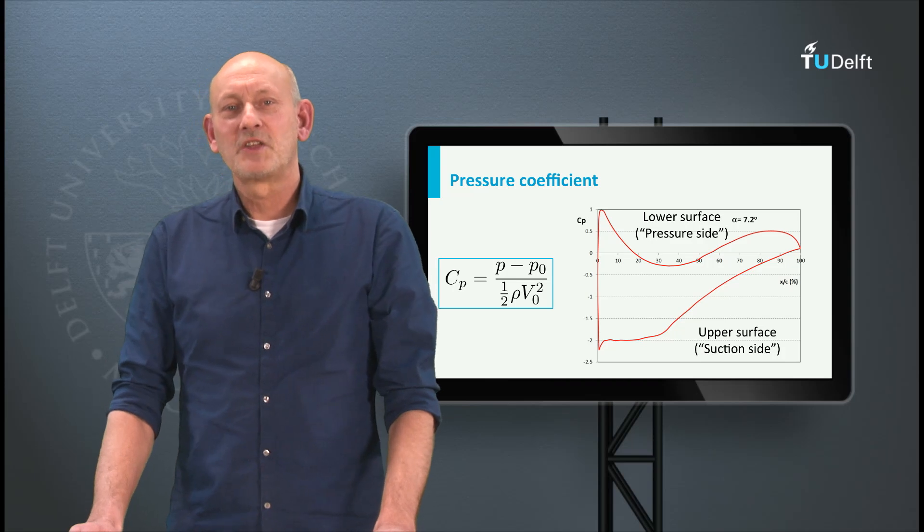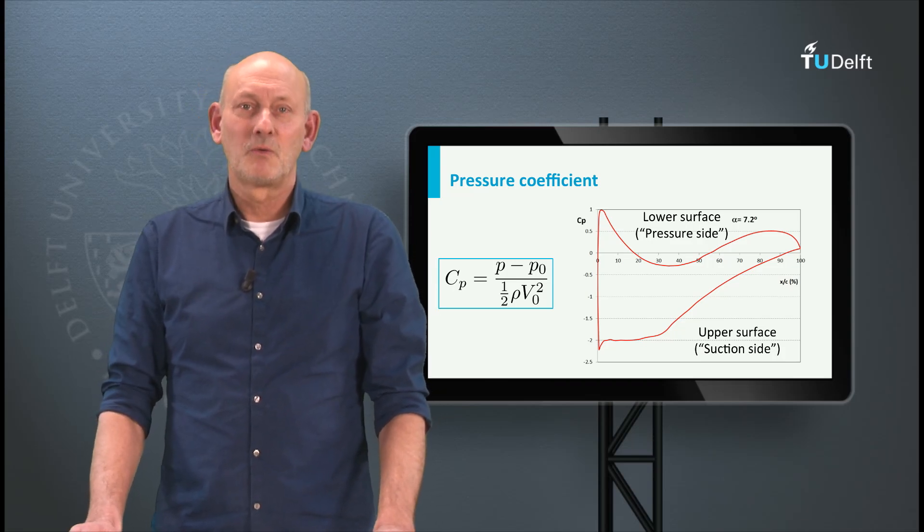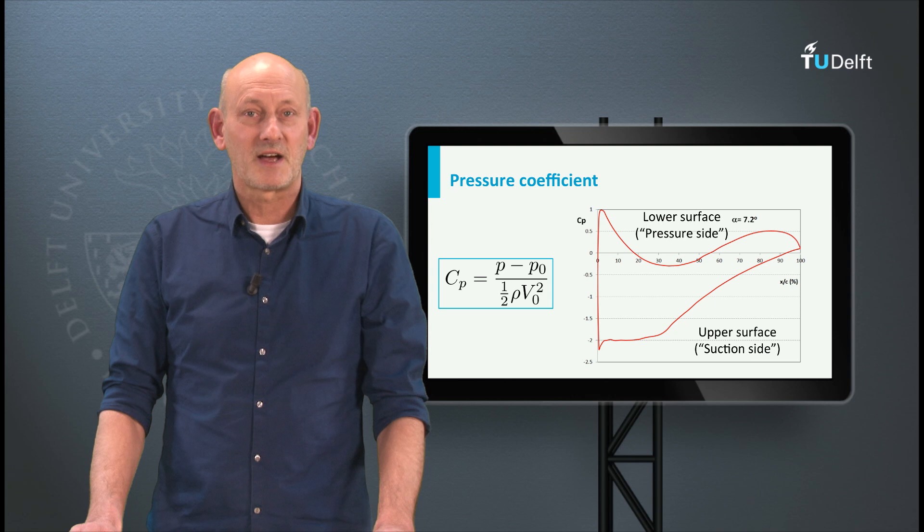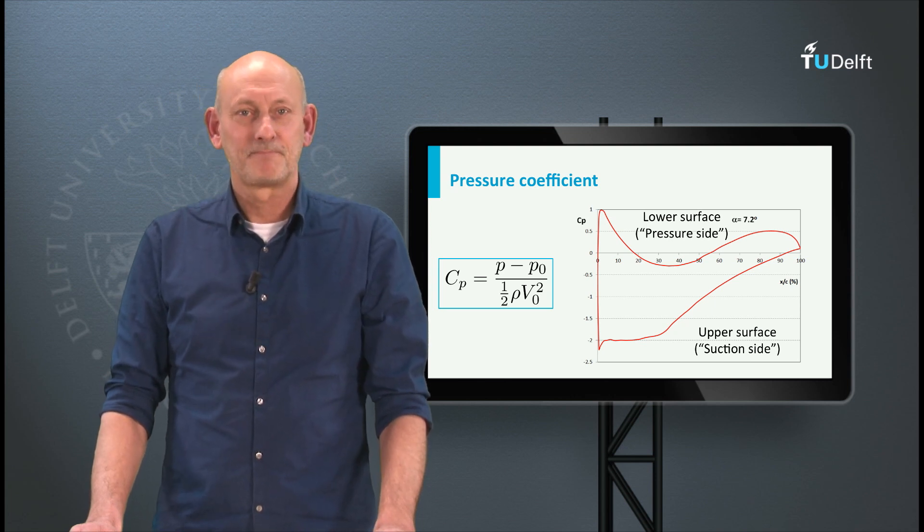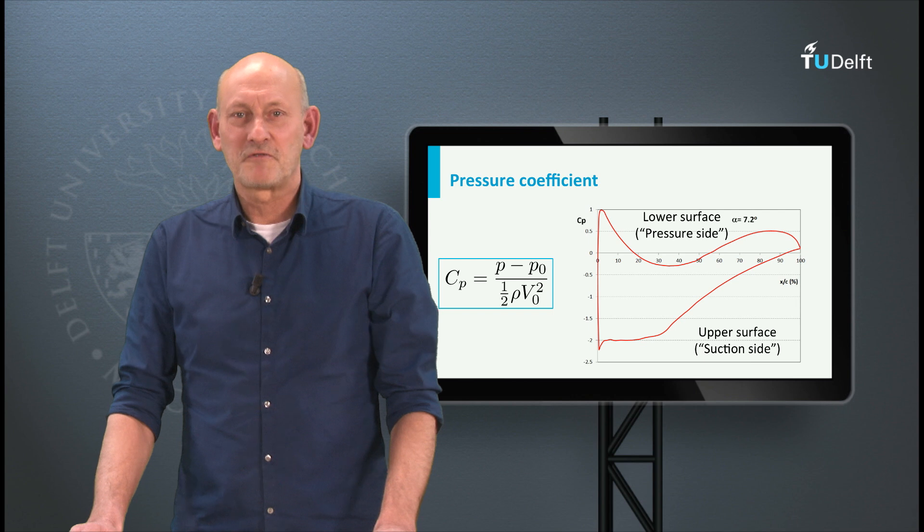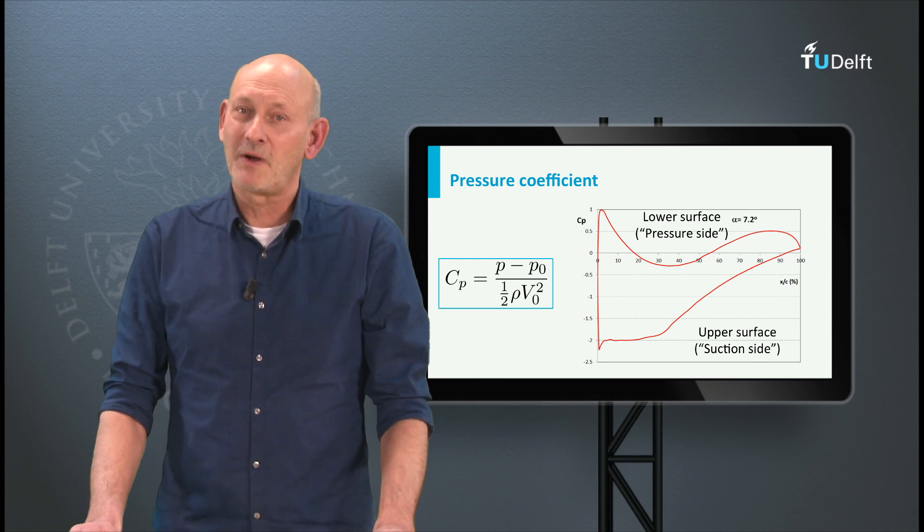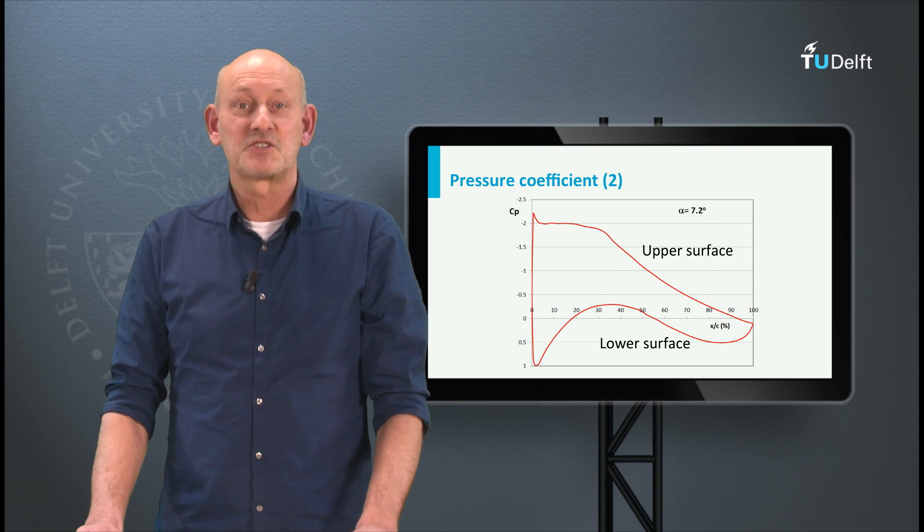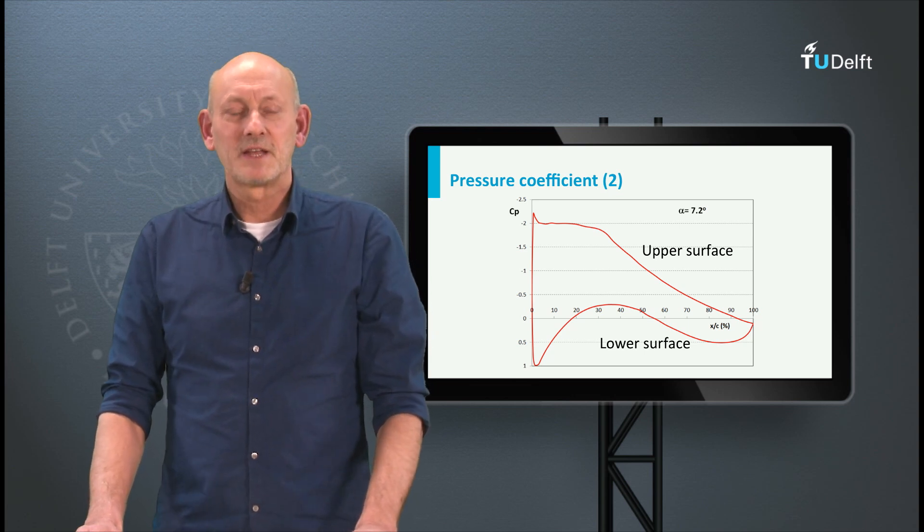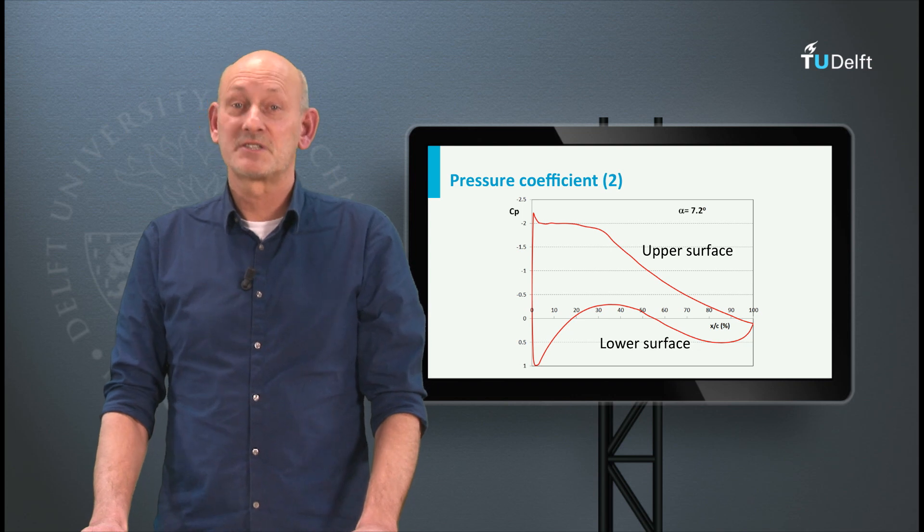Since the pressures on the upper surface are predominantly negative, we also call this the suction side. Alternatively, the lower surface is the pressure side. Because the upper surface pressure distribution is in the lower part of the graph and vice versa, we flipped the graph by letting the negative Cp axis pointing upward. You may have noticed that the highest Cp value does not exceed 1.